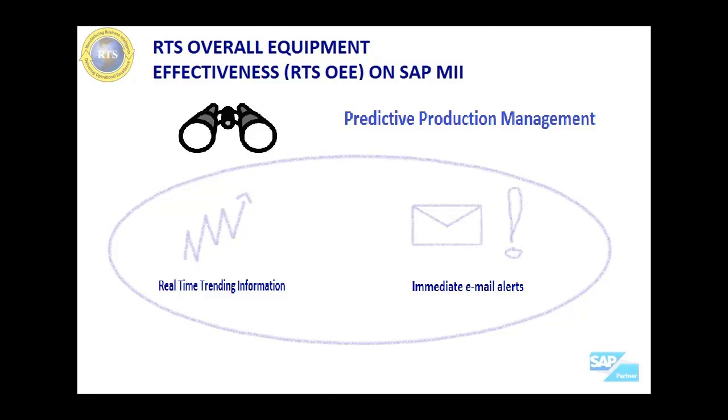To assist you fulfilling the promise of OEE, RTS Consulting Inc. has developed the RTS Overall Equipment Effectiveness providing the following three categories of benefits.